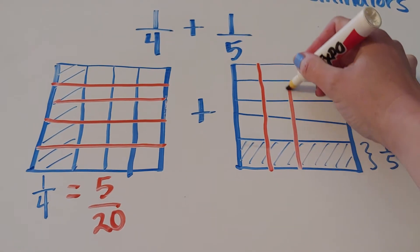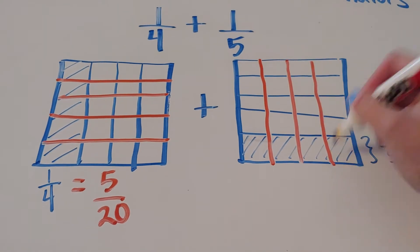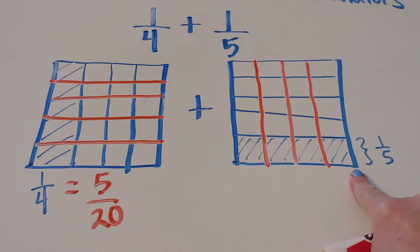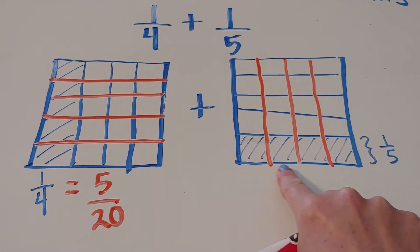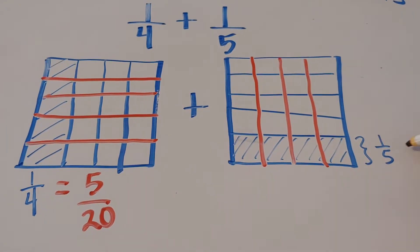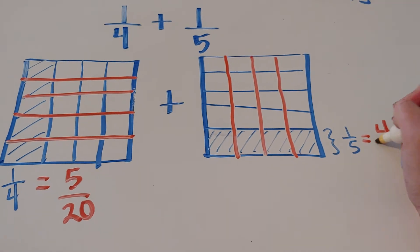So one, two, three, and four. So this section of one-fifth is the same thing as one, two, three, four squares out of twenty.